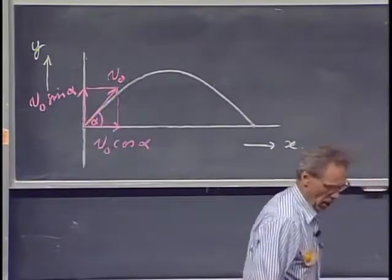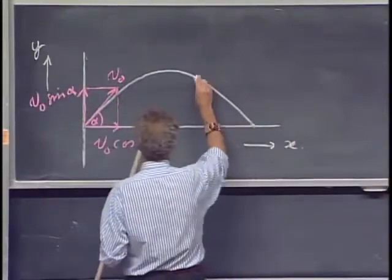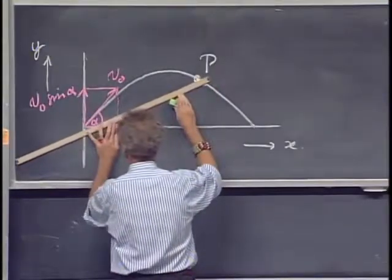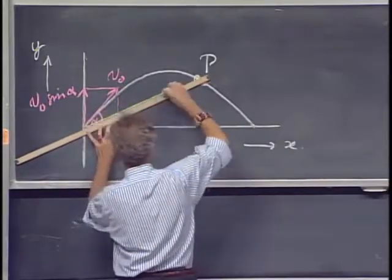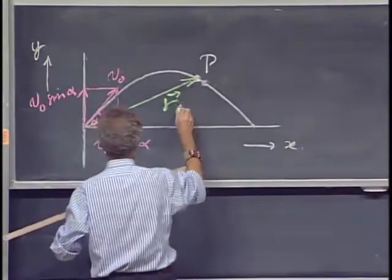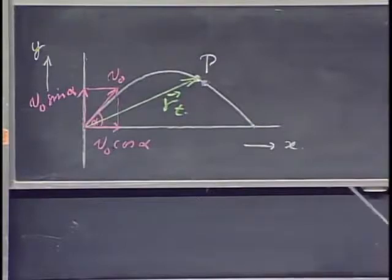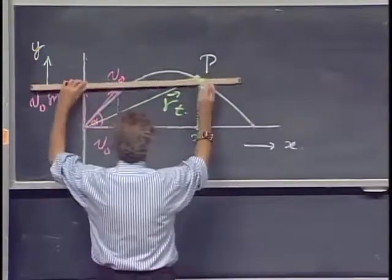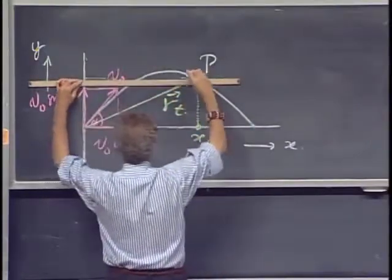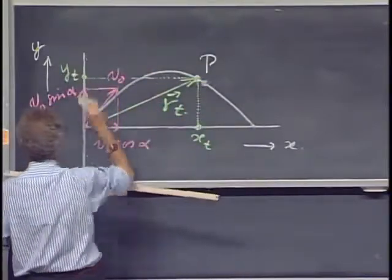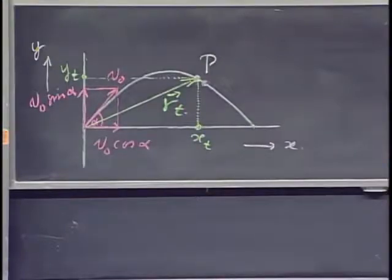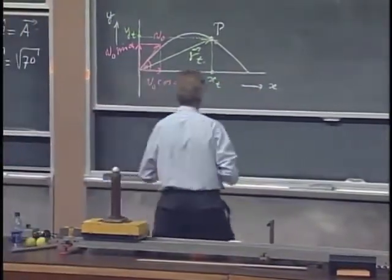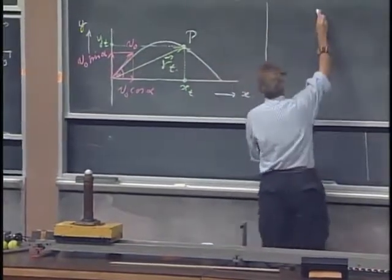A little later in time, that object is here at point P, and this is now the position vector, which we have called r of t. That's the vector that is moving through space. At this moment in time, x of t is here. And at this moment in time, y of t is here. And now you're going to see for the first time a big gain by the way that we have divided the two axes, which live an independent life.